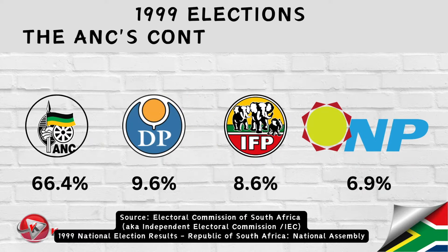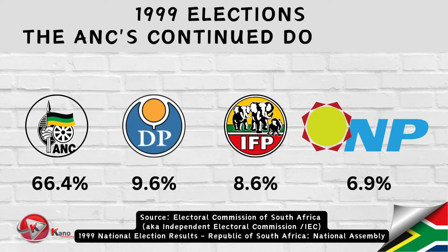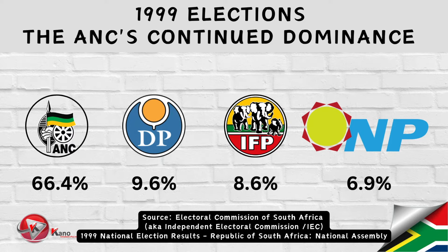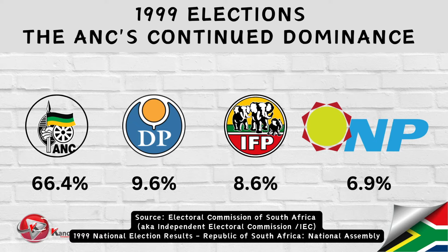Five years later, in 1999, South Africa held its second democratic national and provincial elections. The ANC maintained its dominance and managed to improve its majority to over 66 percent. However, the political landscape was evolving. The Democratic Party improved its performance and became the official opposition in the National Assembly, as well as the official opposition in a number of provincial legislatures.